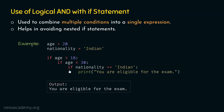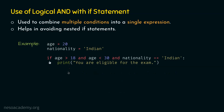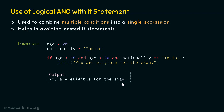We can avoid nested if structure using logical AND. In place of the nested if structure, we now have an if statement with logical AND operators. Here, we check: if age is greater than 18 AND age is less than 30 AND nationality is Indian, then print: you are eligible for the exam. If all these conditions are satisfied, that message will be printed. If any condition is not satisfied, the message will not be printed. Since age is 20 and nationality is Indian, the output is: you are eligible for the exam.